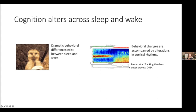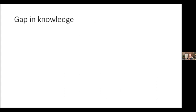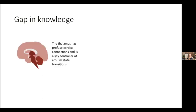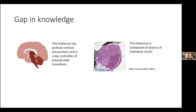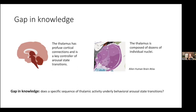While we know there are prominent differences in cortex between sleep and wakefulness, there's a gap in knowledge about how deep brain regions act in concert to drive these changes. We're specifically interested in the thalamus because it has profuse cortical connections, making it well-positioned to alter dynamics across arousal states. It's known to be a key controller of arousal state transitions — animal studies have shown that stimulating specific thalamic regions can drive transitions between sleep and wakefulness. We want to ask: does a specific sequence of thalamic activity underlie behavioral arousal state transitions?